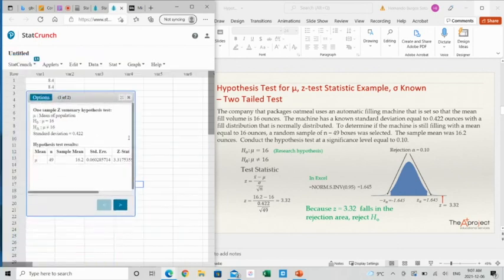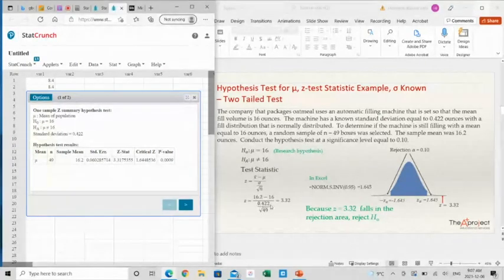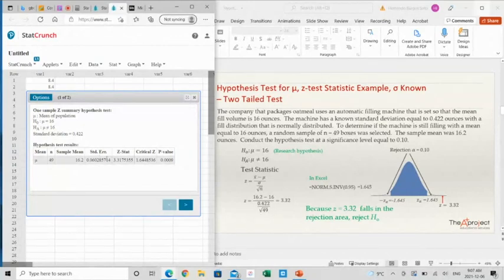So, here are the answers. The sample mean, 16.2, the standard error, remember, the standard error is sigma divided by the square root of n. So, 0.422 divided by the square root of 49. The square root of 49 is 7. This divided by 7 is this number here.